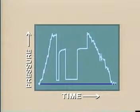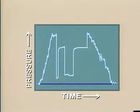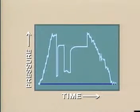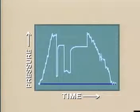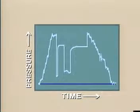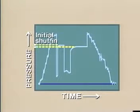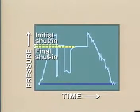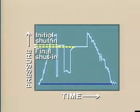The DST may also provide us with a measure of whether the zone being tested is large or small. The evidence we use is the pressure difference between the initial and final stabilized shut-in values. If a significant difference exists, we have a reservoir of limited or finite extent.